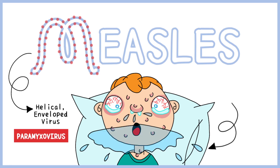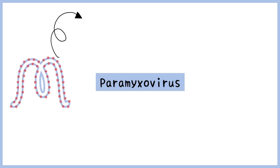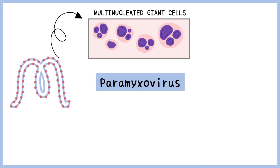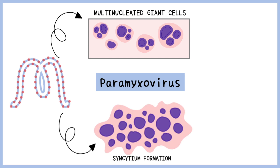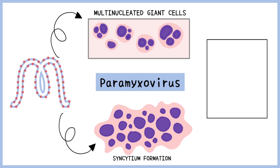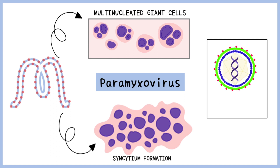The virus always spreads through the respiratory route. The paramyxovirus has the ability to cause the formation of multinucleated giant cells and syncytium formation. This property is similar to that of the herpes virus.